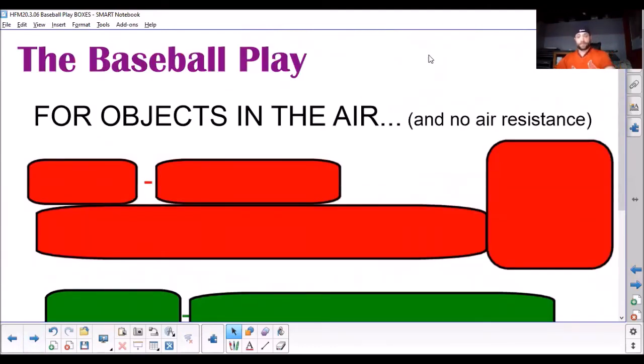So, this baseball play. If we'd been in class, we would have done an activity. And that activity would have shown you that things moving through the air have different things going on in two different directions. So, this is only for things that are in the air. And there's no air resistance.